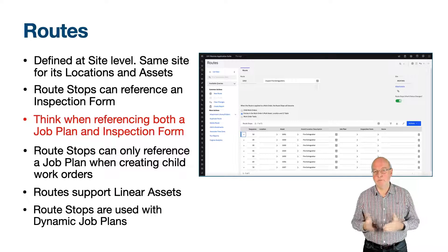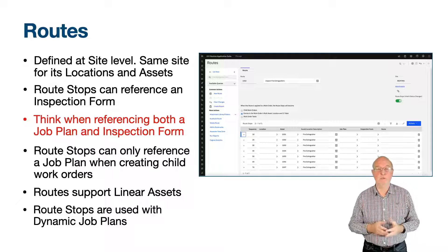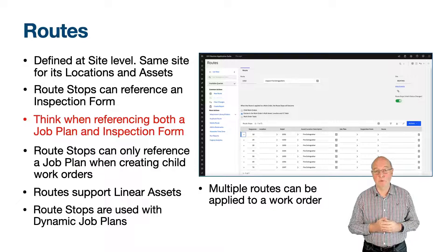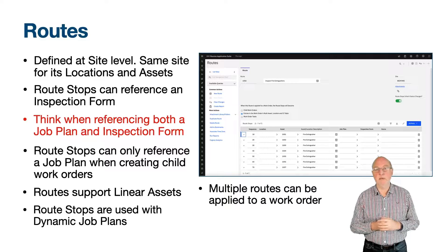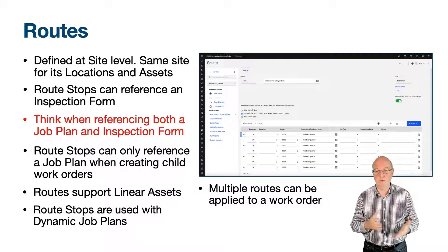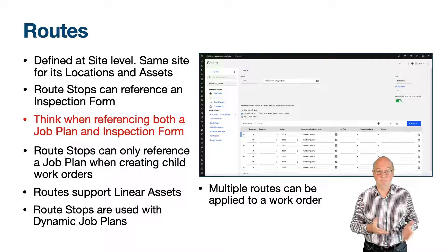A route can be added to a preventive maintenance record, and when the work order is generated, the route stops generate child work orders, tasks, or records in the multiple assets, locations and CIs table depending on the radio button setting. There is an action on the work order tracking application called 'apply route,' where you select the route to apply. Multiple routes can be applied to the same work order — for example, you could have a route applied that creates child work orders, tasks, and records in the multiple assets, locations and CIs table window. You can also apply two routes that both create records in that table. If that were a regular event, you would need to consider how you use the sequence field so that the two routes are not mixed up. It is also possible to apply the same route multiple times to the same work order, so be careful.